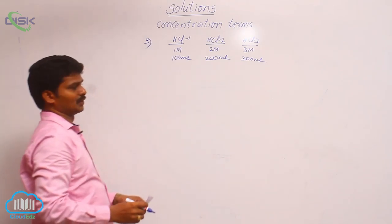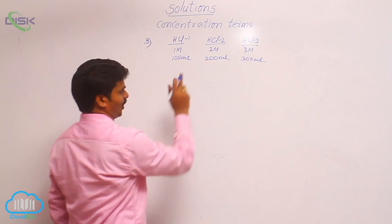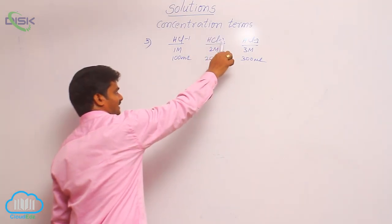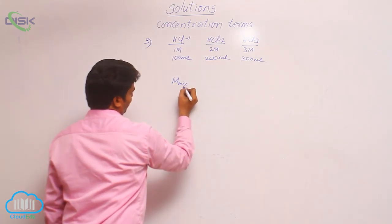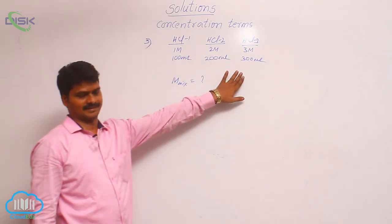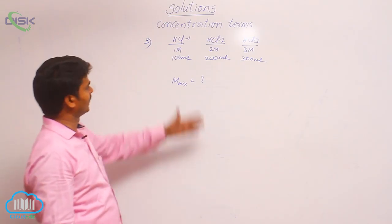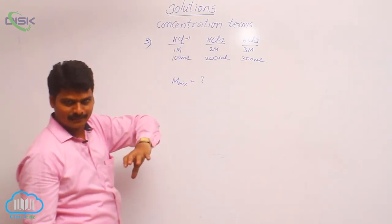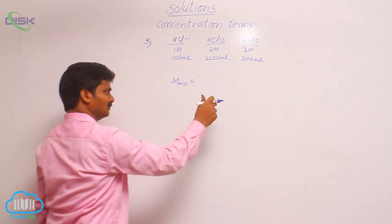These three solutions are mixed. Then what is the molarity of the resulting solution? HCl 1, HCl 2, HCl 3 — what is the molarity of the mixture? If these three are mixed, what is the molarity of the resulting solution? Here, the solutes are all the same.